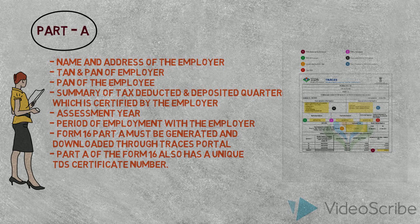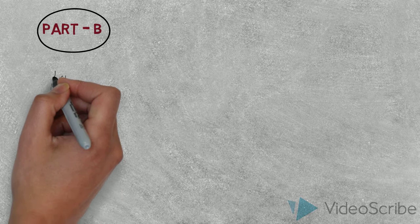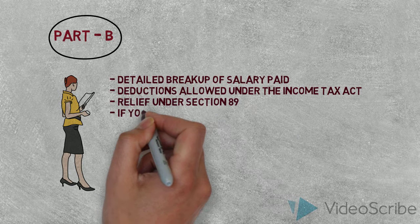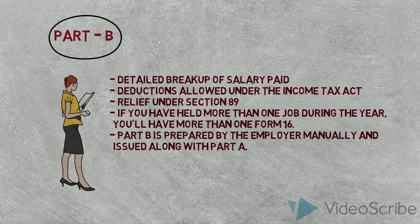Part B contains salary details, including perks and perquisites received, taxable salary, exemptions under various sections like Section 80C and 80D. If the employee has submitted proofs, it shows HRA claimed and HRA received. All deductions and exemptions are shown in Form 16 Part B.